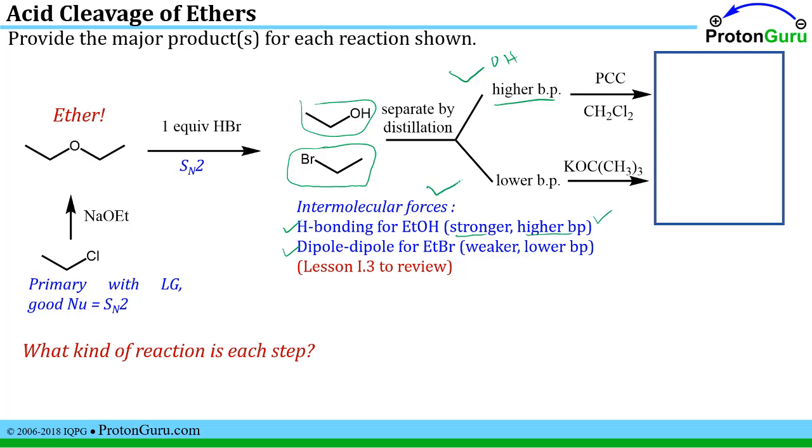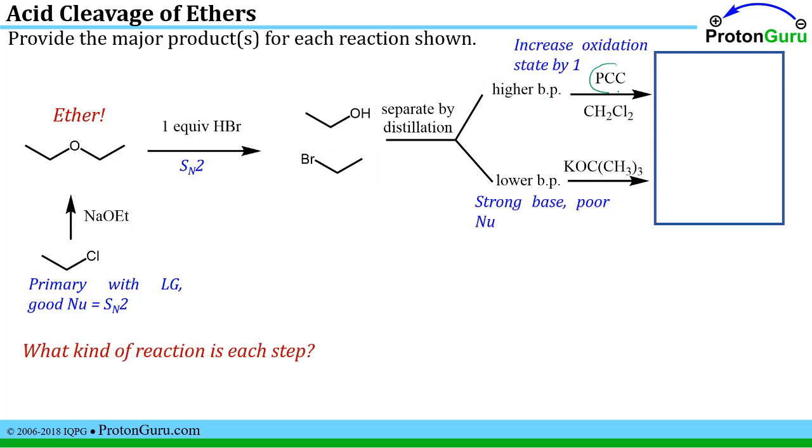We know that PCC is used to increase the oxidation state by one for the carbon to which the alcohol is attached. So we could take one of the hydrogens off of this alcohol and make a new bond to the oxygen, which will have to lose its hydrogen to accomplish that. Think through and scribble on our scratch paper, that's probably what will happen.